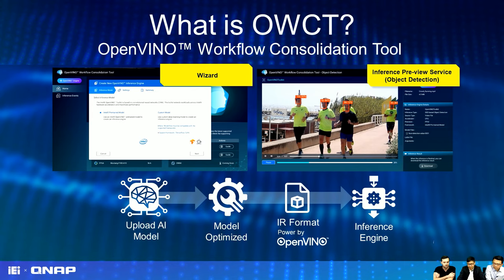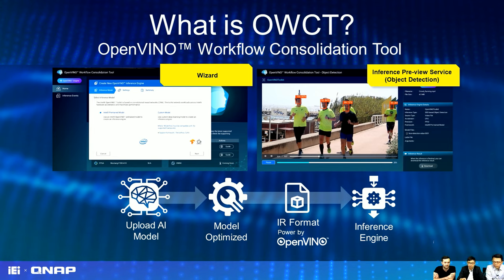Step three is to gather the IR — powered by OpenVINO, you can use the IR to run a container in the inference engine. We also provide an inference preview surface in the GUI. For example, in a surveillance scenario, you can see which people are detected in frame as the tool detects their faces. We'll have a demo shortly.